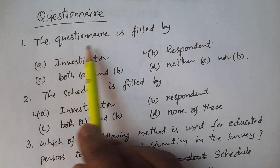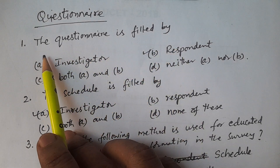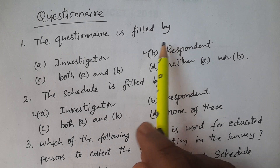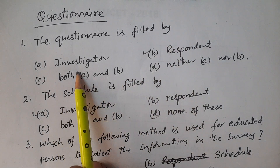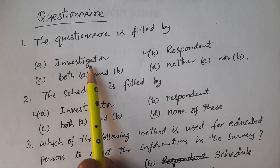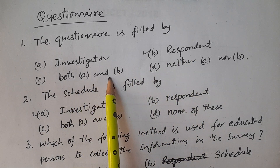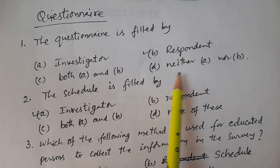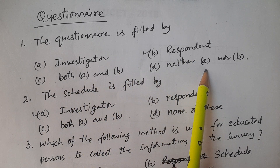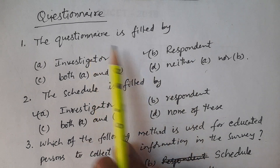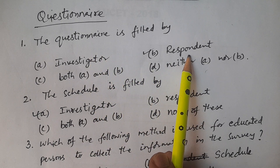The first question: the questionnaire is filled by — options: A. Investigator, B. Respondent, C. Both A and B, D. Neither A nor B. The answer is option B: Respondent. The questionnaire is filled by the respondent.